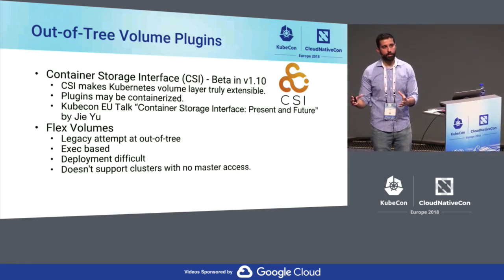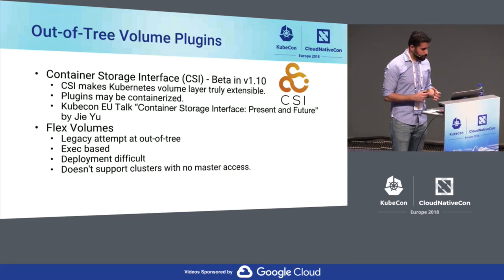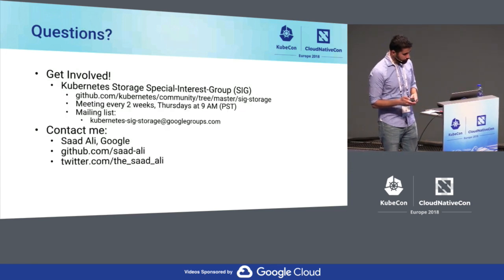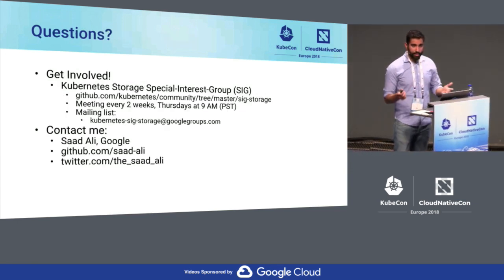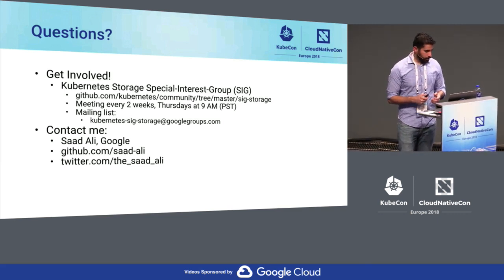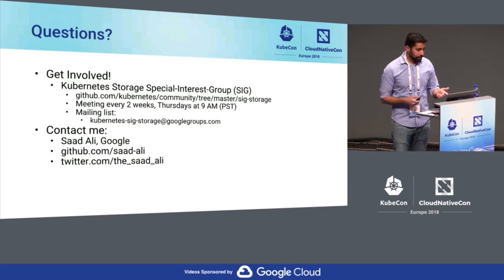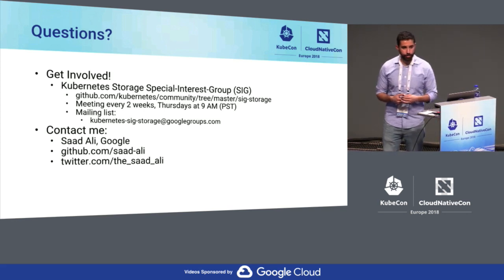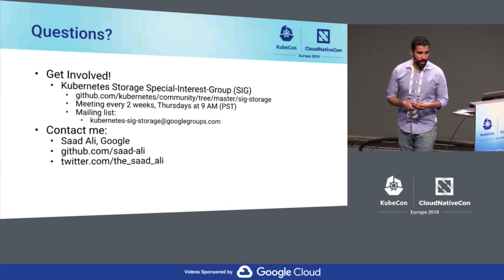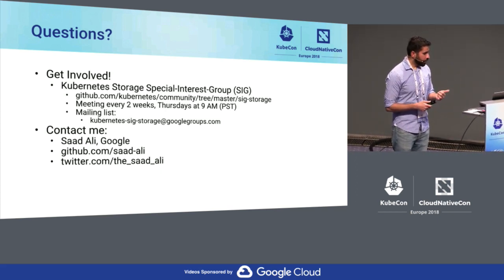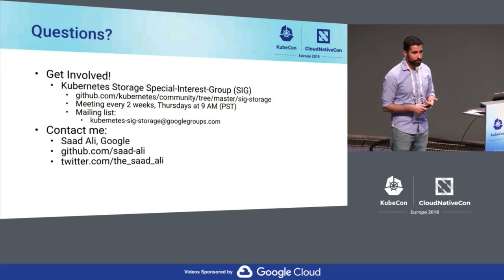The idea is that we'll keep flex in maintenance mode and invest in the future with CSI. CSI's API will continue to expand while flex is maintained as-is. If you want to get involved, join the Kubernetes SIG Storage group. We have meetings every two weeks — follow the link for details on how to join, including the mailing list and Slack channel.